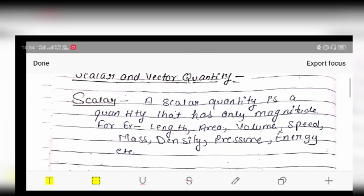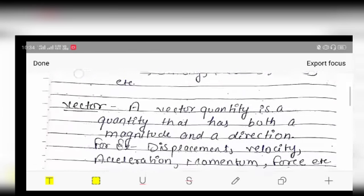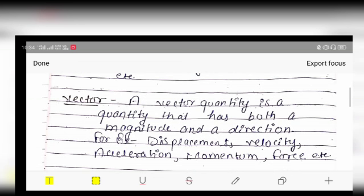A quantity that has only magnitude or magnitude but direction is not given, such quantities are called scalar quantities. Now what is vector quantity? A vector quantity is a quantity that has both